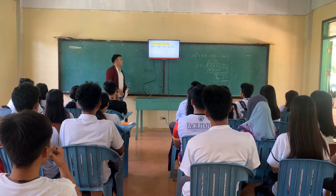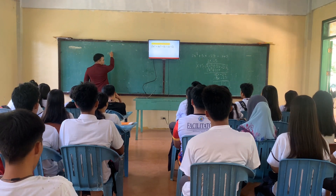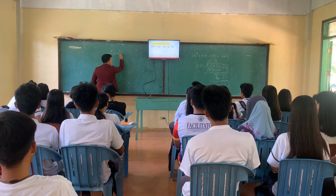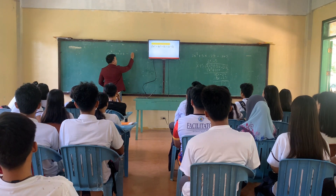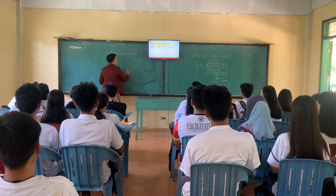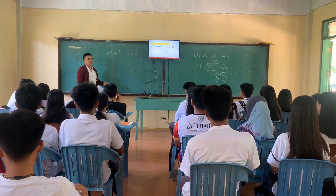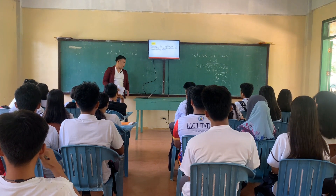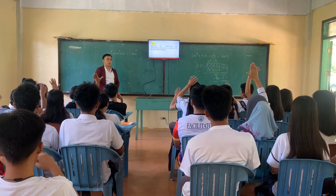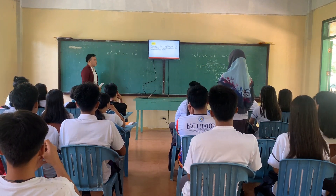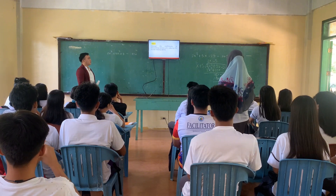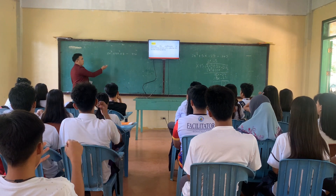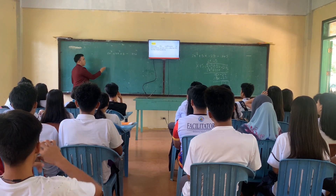So we have here our example: 3x cubed plus 4x squared plus 8 divided by x plus 2. We will try to divide it using synthetic division, guided by different steps. Step 1: arrange the coefficients in descending powers of x, placing zeros for the missing terms. The coefficient of 3x cubed is 3, and the coefficient of 4x squared is 4.